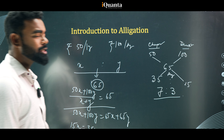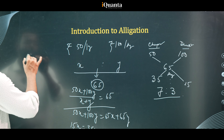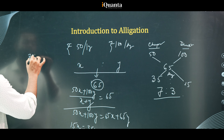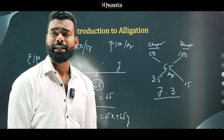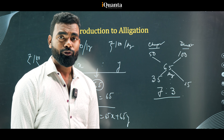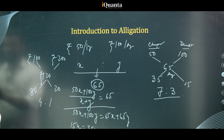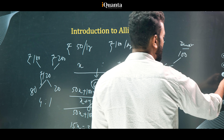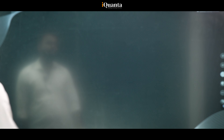This is the method of mixture allegation — the simplest way to find the ratio. For example, if prices are 100 and 200 and average price is 120: dearer minus average = 200 - 120 = 80, average minus cheaper = 120 - 100 = 20, ratio = 80:20 = 4:1. You can use this method to find the ratio directly.